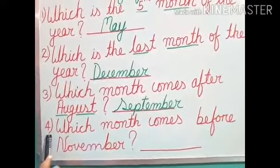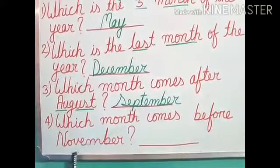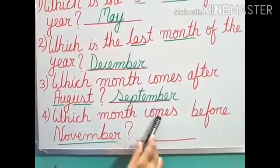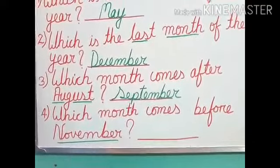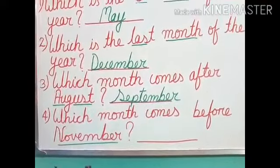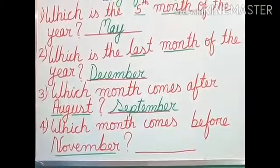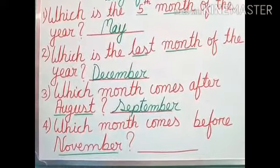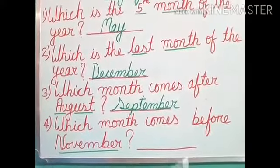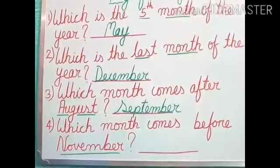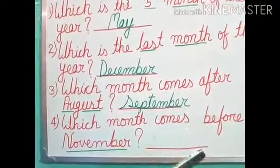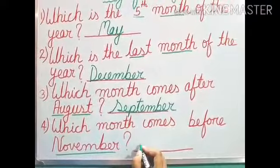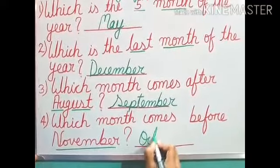Number 4: Which month comes before November? Let us count again — January, February, March, April, May, June, July, August, September, October, November. So before November, which month? October. October is the month before November. We will write here October.